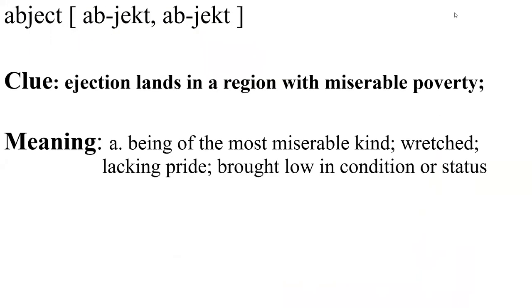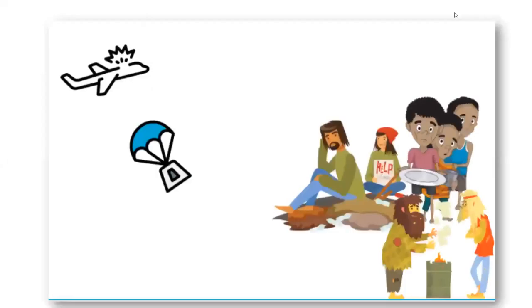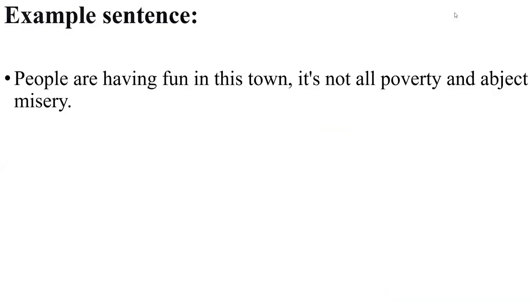Abject. Clue: ejection seat lands in a region with miserable poverty. Abject means being of the most miserable kind, lacking pride, brought low in condition or status. It also means an abject apology. Visualize the ejection seat landing in a region of abject poverty, or the people living there in miserable conditions. Example: people are having fun in this town; it's not all poverty and abject misery.